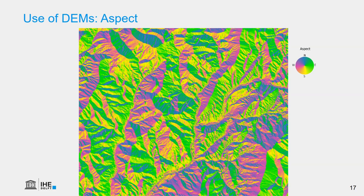Another layer we can derive from digital elevation models is the aspect — the orientation of the slope, usually expressed as compass direction. Note that in this case we need a circular or directional legend where north, south, east, and west are opposite. The aspect is a useful map because the orientation of the slope determines the amount of solar radiation received, which affects hydrology, vegetation growth, erosion, and weathering.